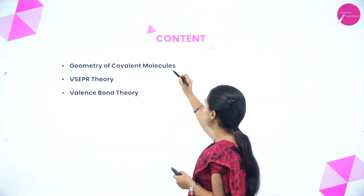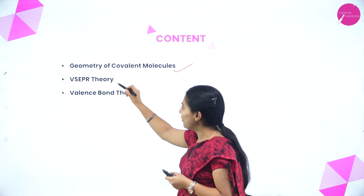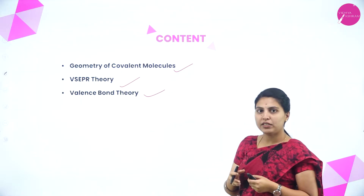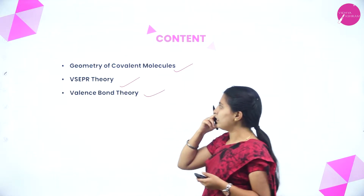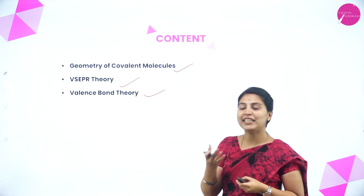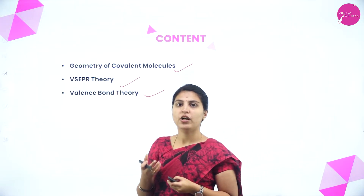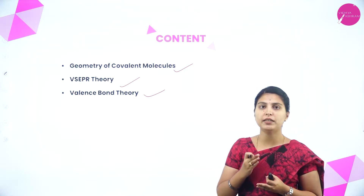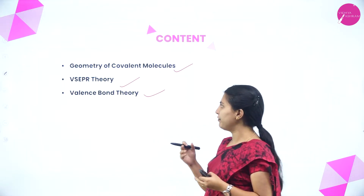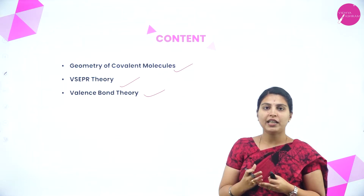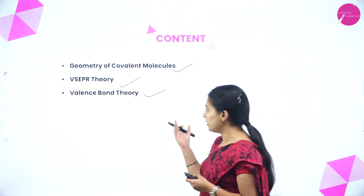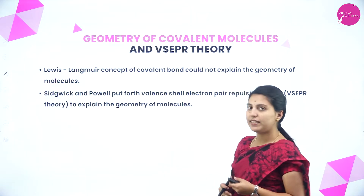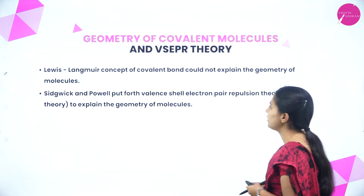In this session we will discuss the geometry of covalent molecules, VSEPR theory, and valence bond theory. Each molecule has a different molecular geometry based on the types of bonds, lone pairs, and bond pairs. VSEPR theory covers attractive and repulsive forces, and valence bond theory will also be completely studied in this session.